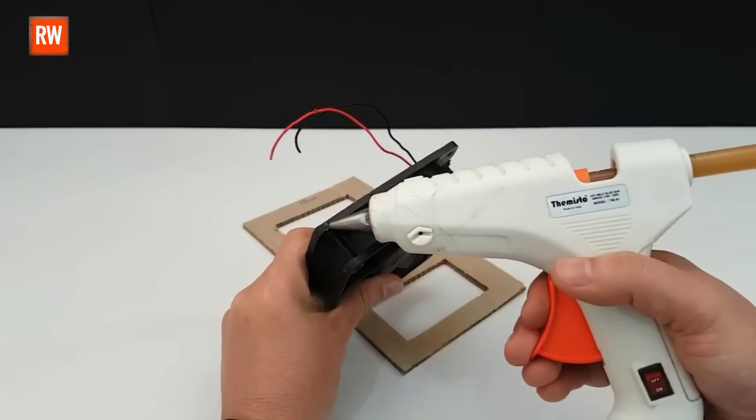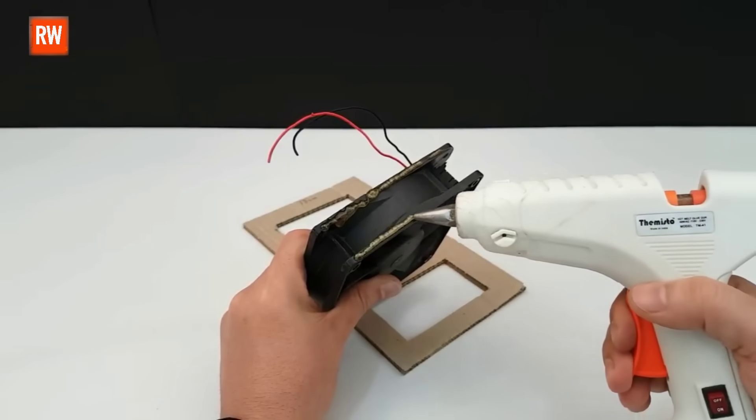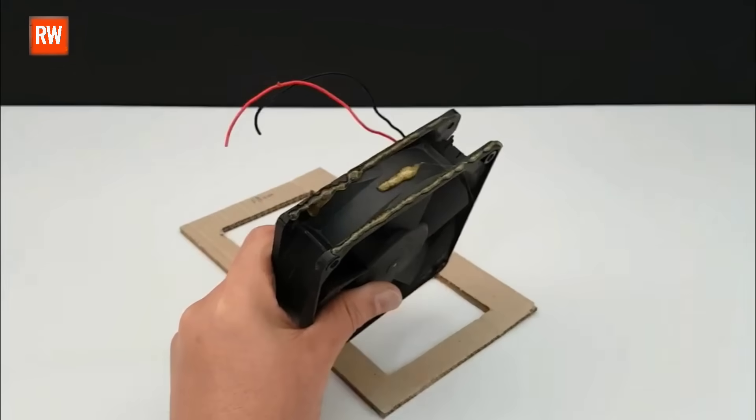Now, we'll move on to fixing the 12V DC fan. Using a hot glue gun, we'll secure it properly to ensure it stays in place and works effectively.